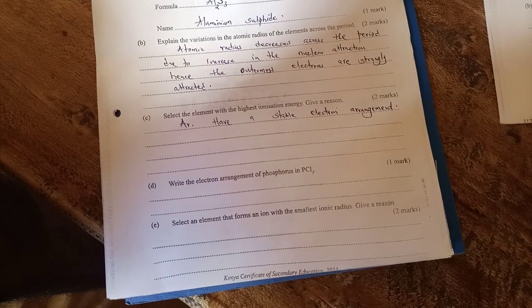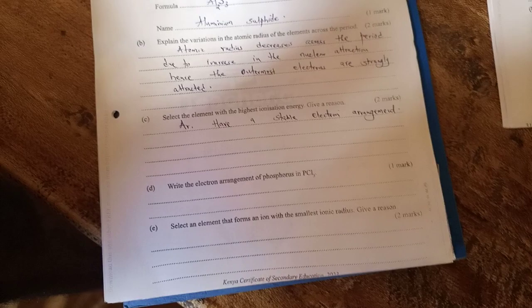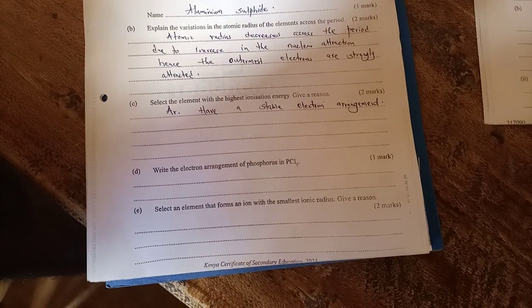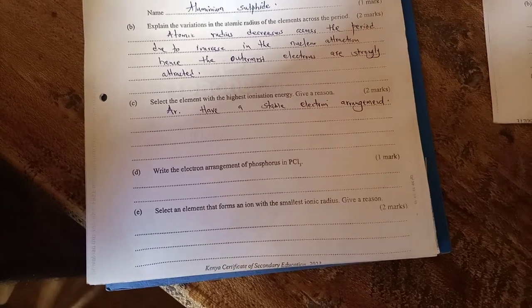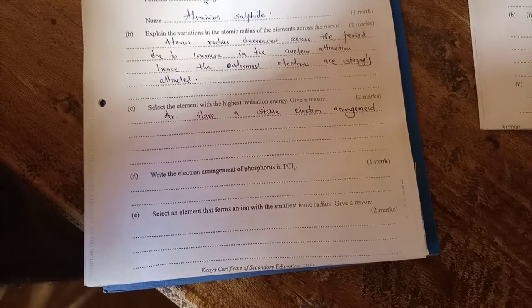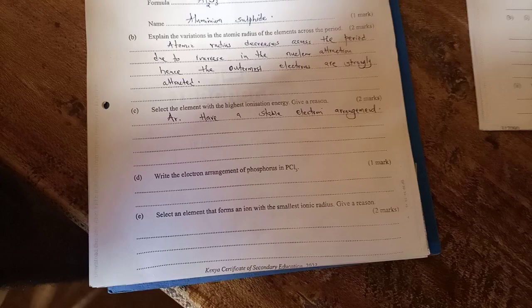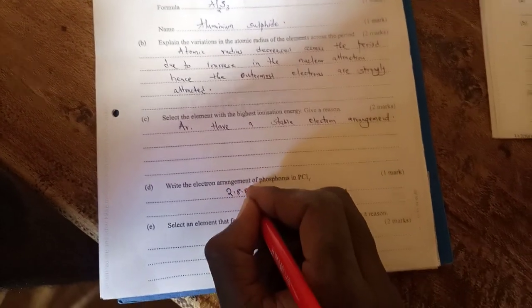Write the electron arrangement of phosphorus in phosphorus trichloride. First, the arrangement of phosphorus before it reacts with the chlorine, it was 2,8,5. But, in this formula, the chlorine donates 3 electrons, which adapt to the initial configuration of the phosphorus. Hence, the arrangement becomes 2,8,8.